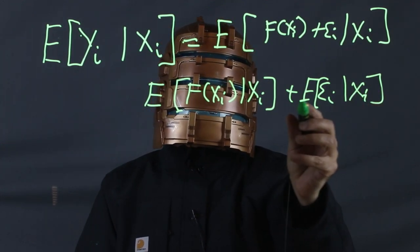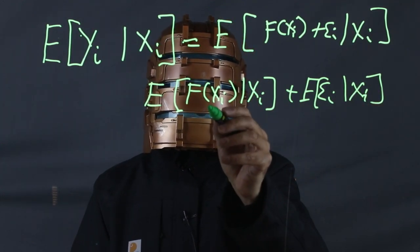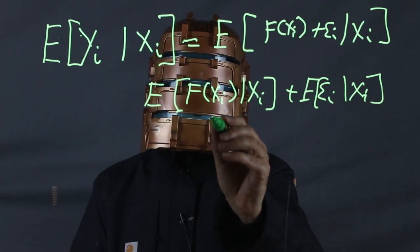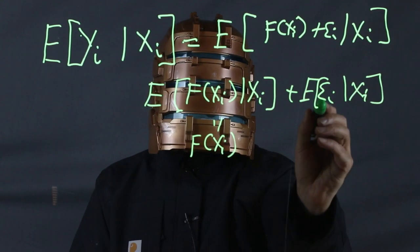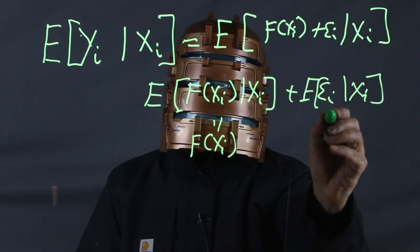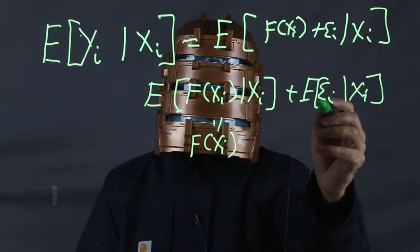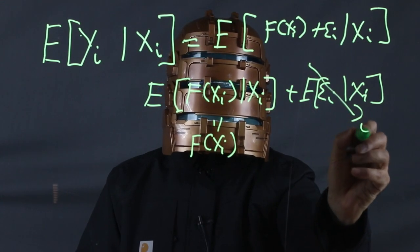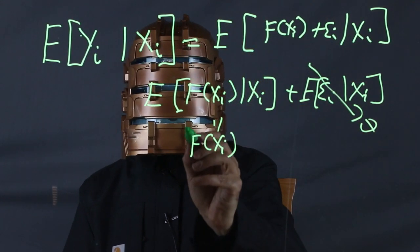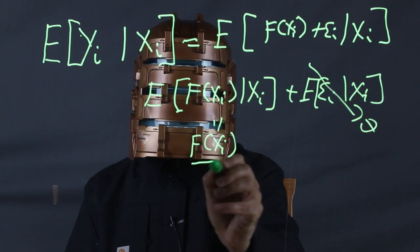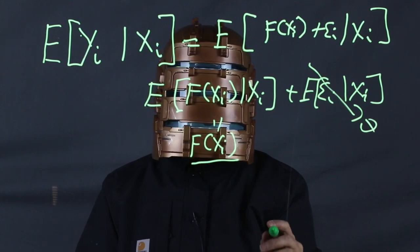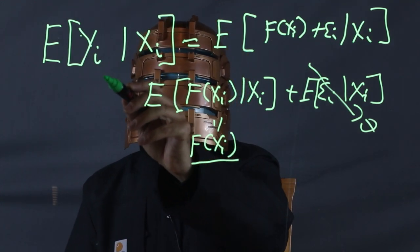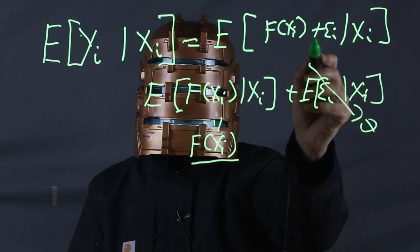And we're essentially done. f is a function. It's deterministic. So this just equals f of x_i. This error, we've assumed to be mean 0 for other reasons. And again, we use that assumption again. So this goes to 0. So this function f, the unobserved generative function, is actually reporting expected values, not instance values like y, because it literally misses the error term.